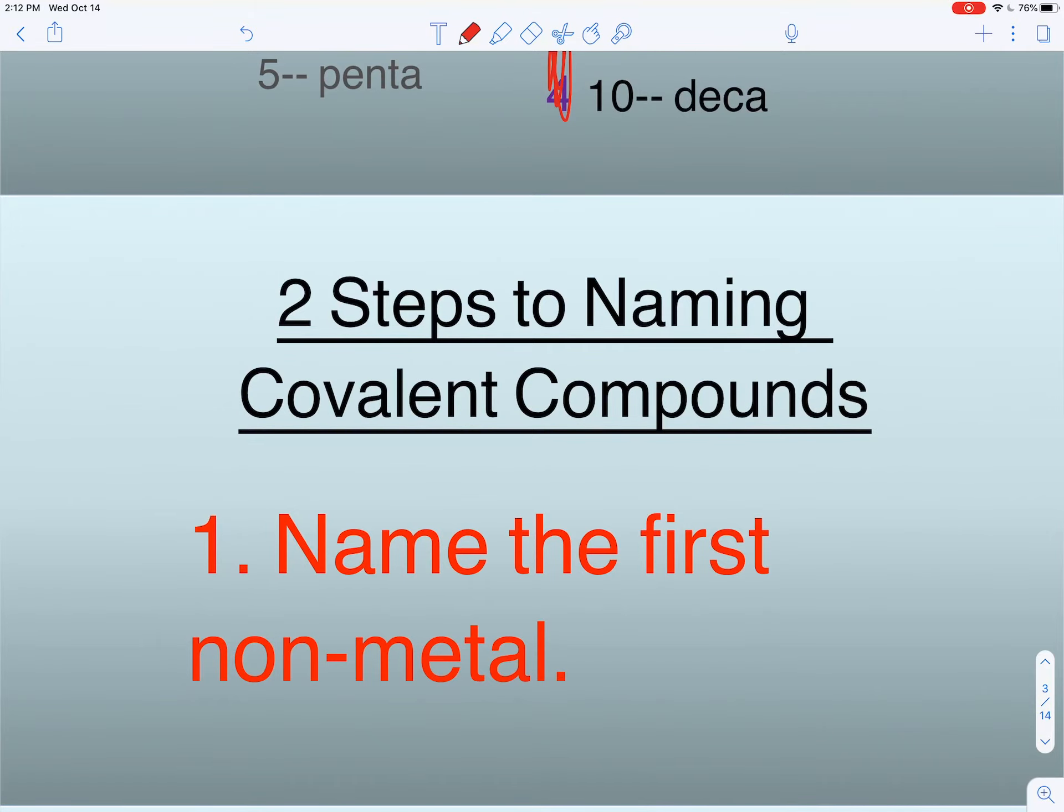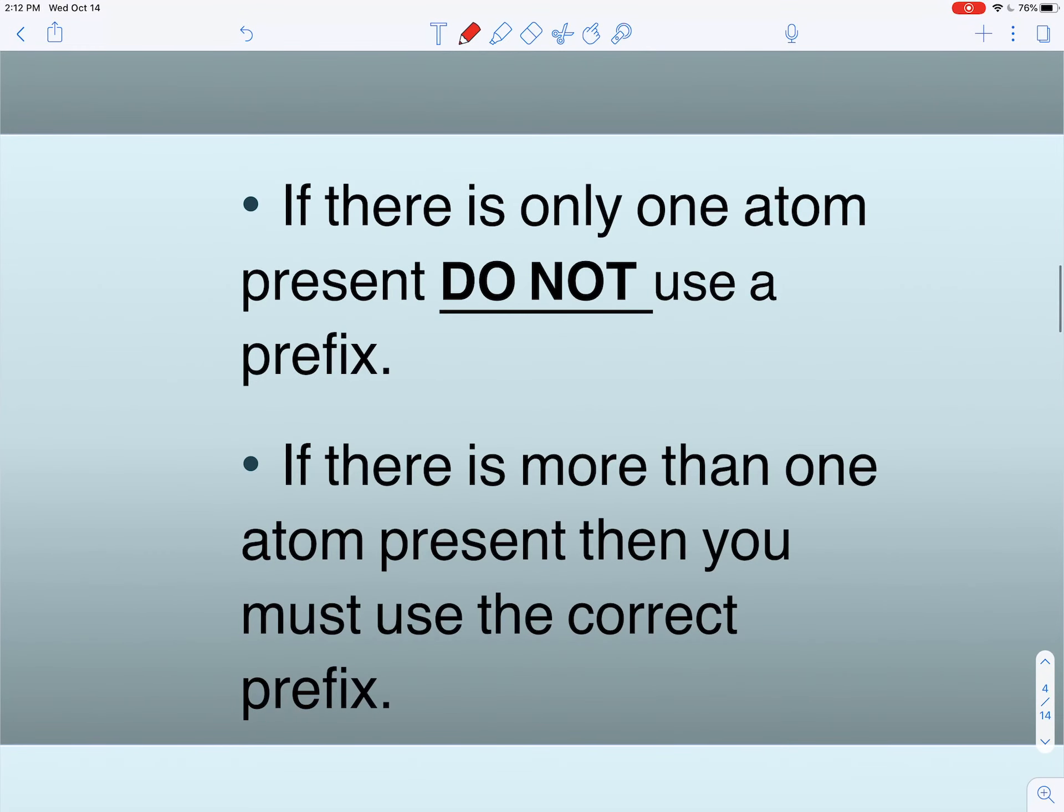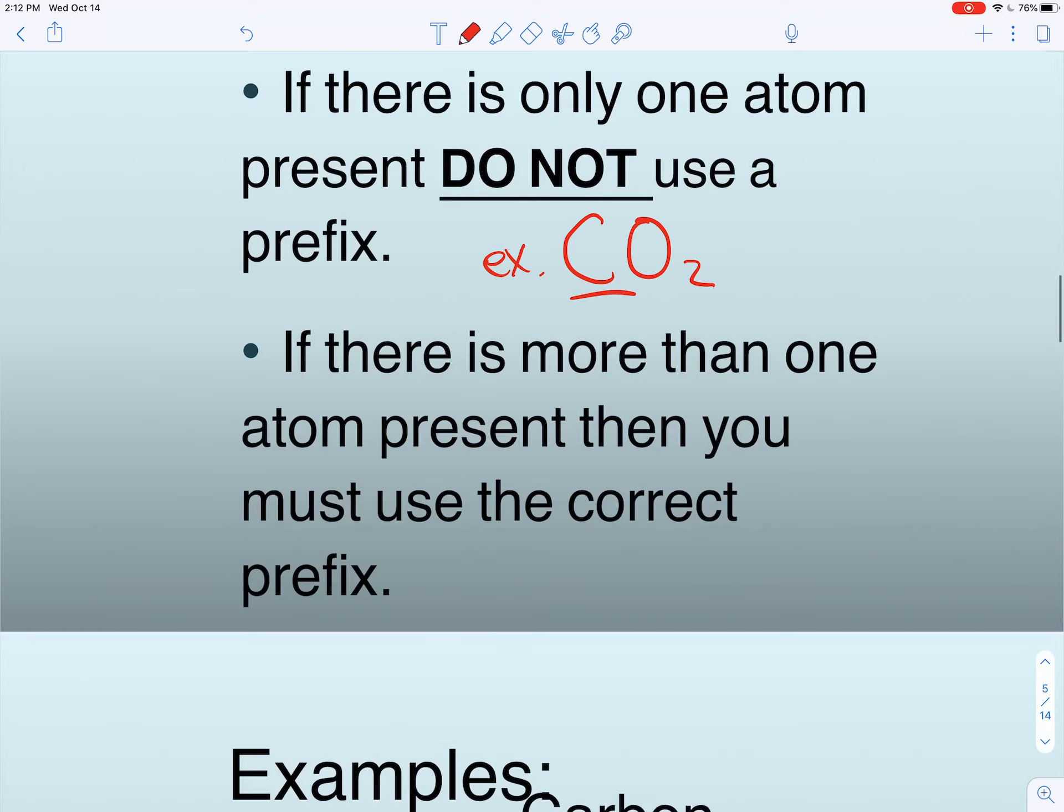There are two steps to naming covalent compounds. First we name the first nonmetal, and there's only one simple rule: if there's only one of them, we don't use a prefix. For example, there's only one carbon in CO2, so we wouldn't use a prefix for that carbon.